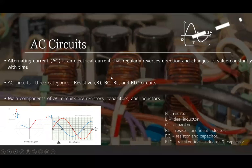AC circuits. AC is an electrical current that regularly reverses direction and changes its value constantly with time. AC circuits can be divided into three categories: R, RC, RL, and RLC circuits. The voltage and current are modeled by direction and latitude in AC circuits.